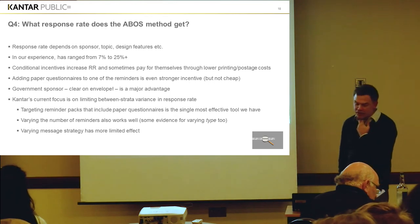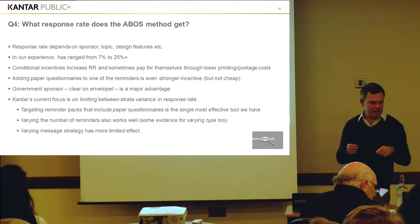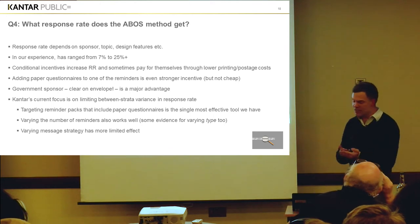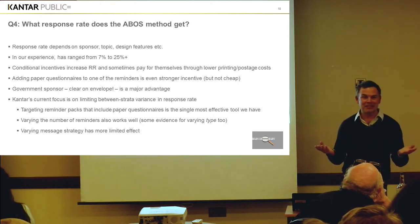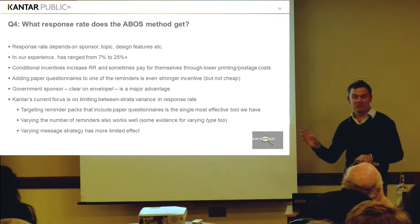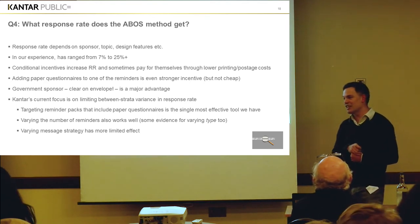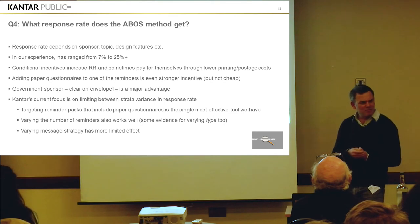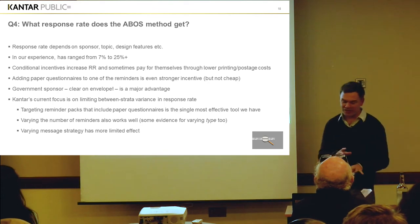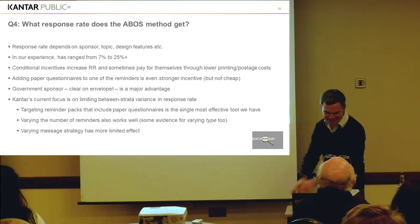Government sponsor — incredibly good, and needs to be clear on the envelope so people actually open it. The BBC has adopted this method for its main audience tracker. When we tested it, I thought BBC, that's got to be the best brand to put out there. But no — no better than a barely known government agency. The Financial Conduct Authority, the Competition and Markets Authority — they all did better than the BBC. So the government sponsor is the one. If you can get one, get one.